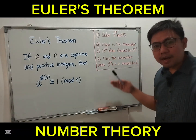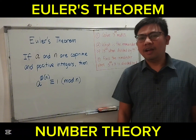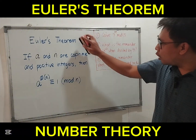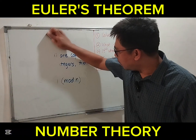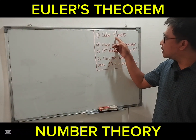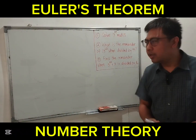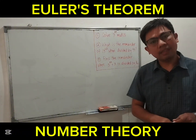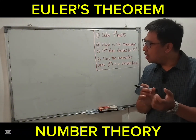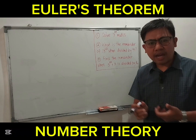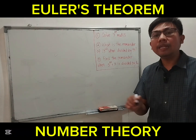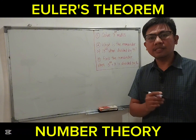So we have three examples for Euler's theorem. Let's solve number one: solve 7 to the 99th power modulo 15. We cannot solve this using just an ordinary scientific calculator, so we will use Euler's theorem.